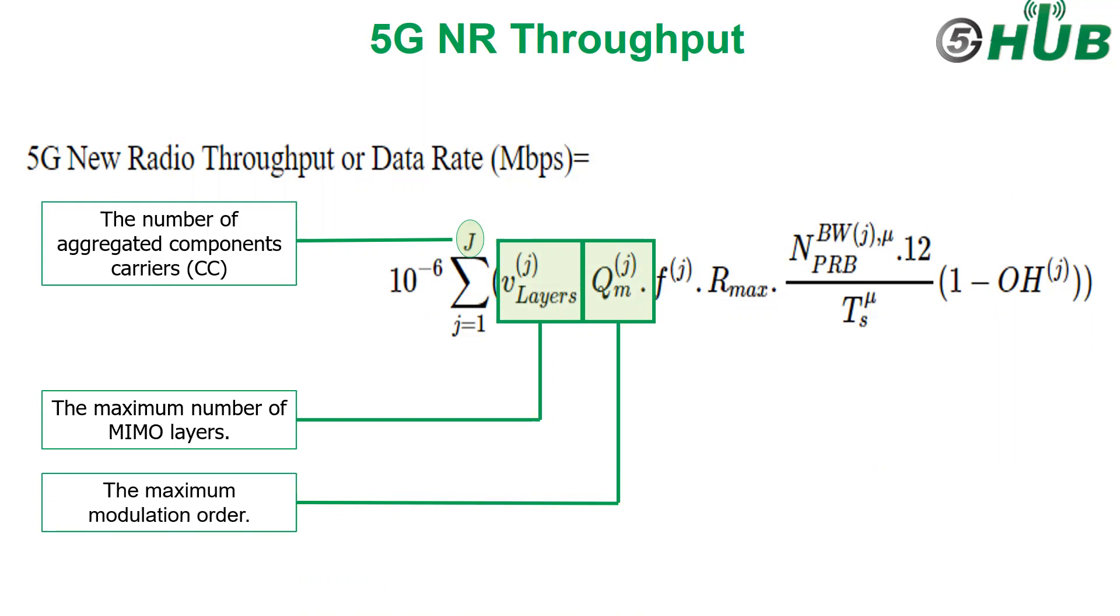Q^M_J represents the maximum modulation order. Modulation order means the number of different samples that can be transmitted using the digital communication system. 5G new radio supports different modulation types: QPSK 2-bit, 16 QAM 4-bits, 64 QAM 6-bits, and 256 QAM 8-bits.